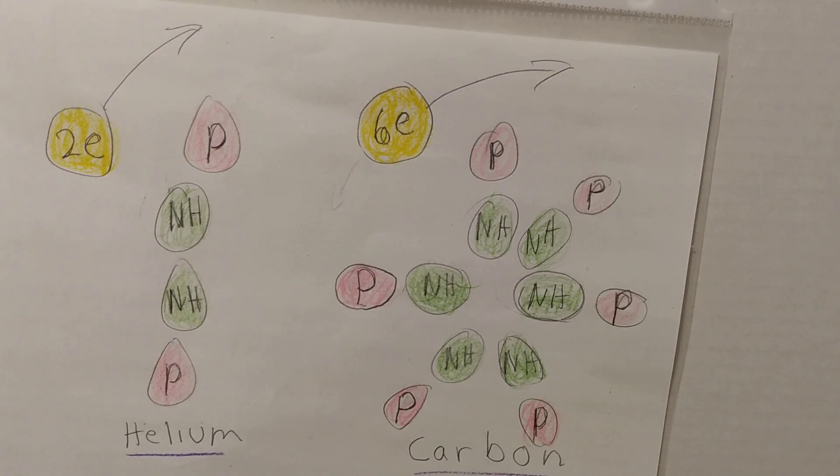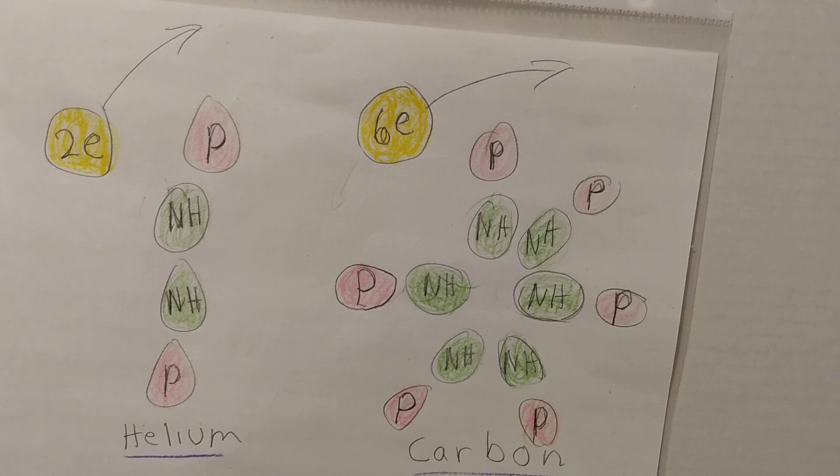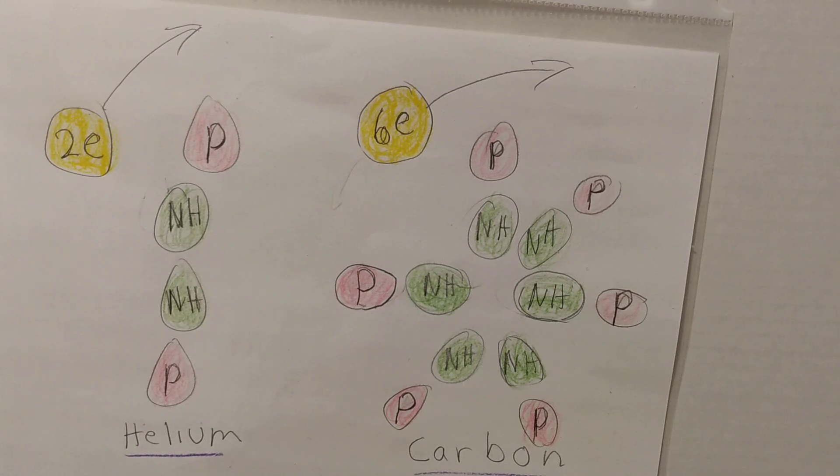The drawing shows my model for the nucleus of these elements, helium and carbon. NH stands for neutron hydrogen. P stands for proton. E stands for electron. Note how the neutral charged neutrons keep the protons apart.